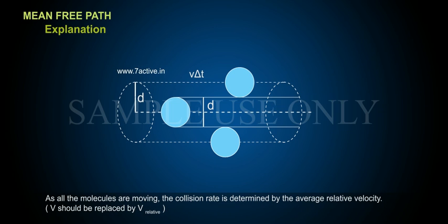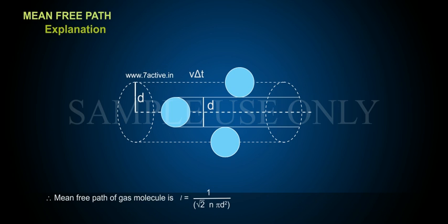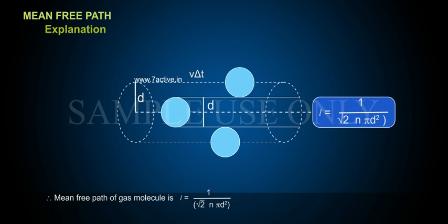As all the molecules are moving, the collision rate is determined by the average relative velocity. v should be replaced by v relative. Therefore, mean free path of gas molecule is l equals 1 by square root 2 n pi d square.